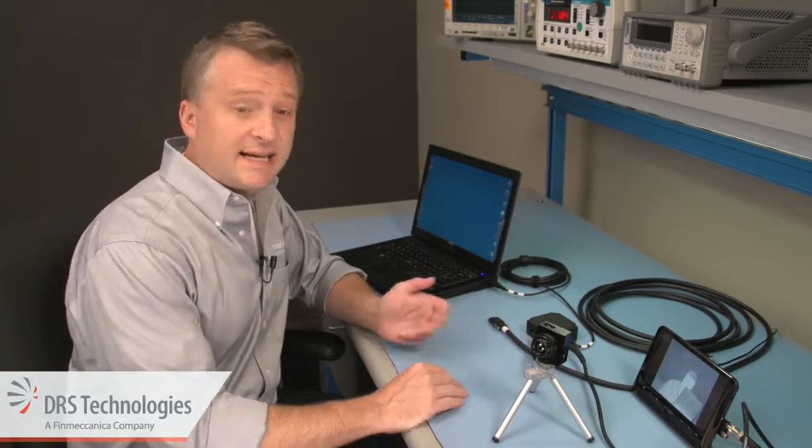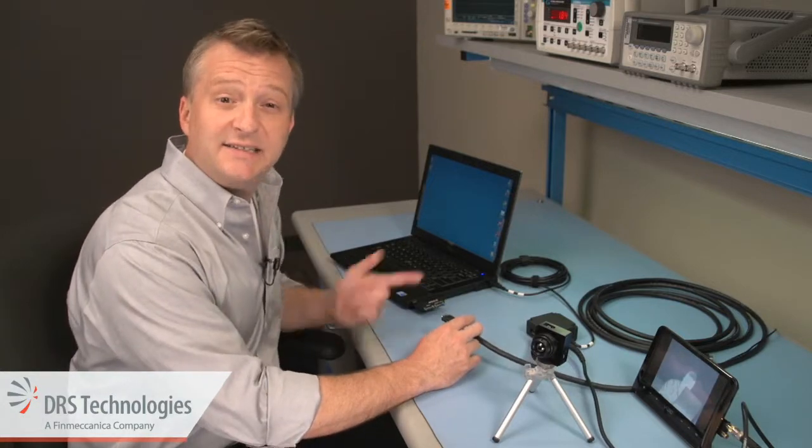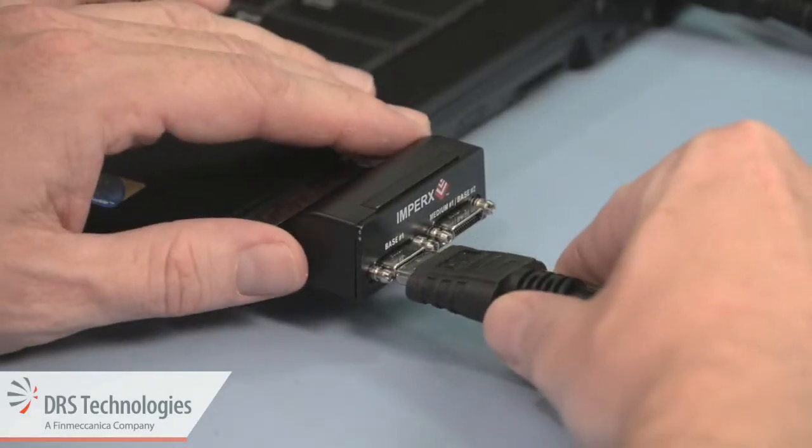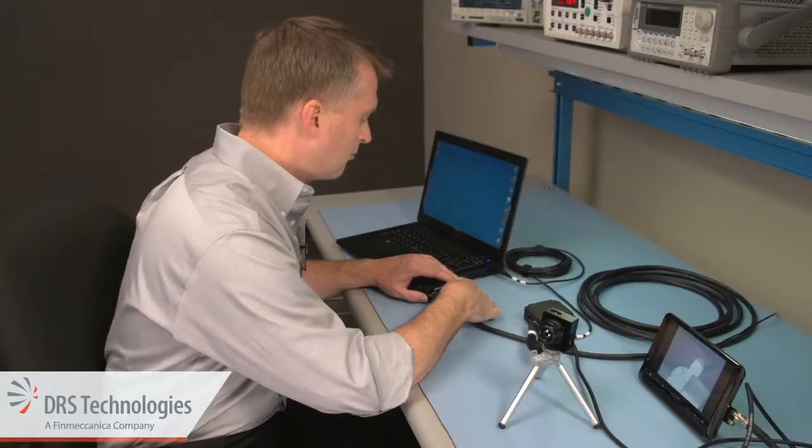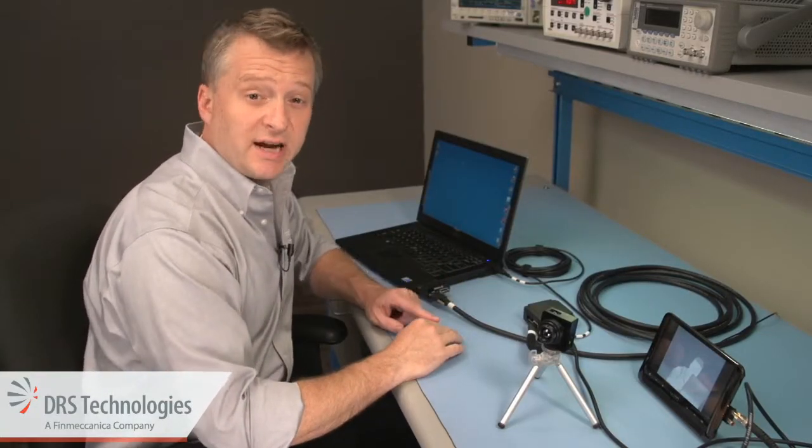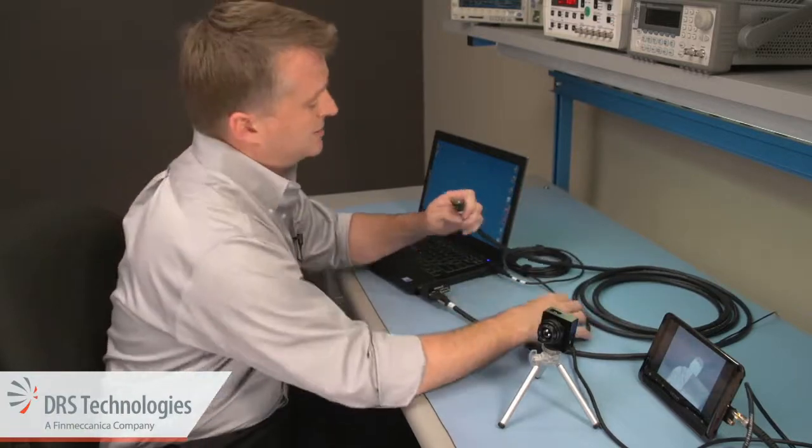Next, take the camera link cable and connect it to the frame grabber card. Take the other side of the cable and connect it to the breakout box.